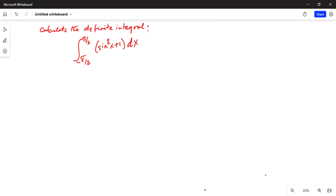Calculate the definite integral. The limits are from minus pi over 2 to positive pi over 2. And we have to integrate sine square x plus 1 dx.